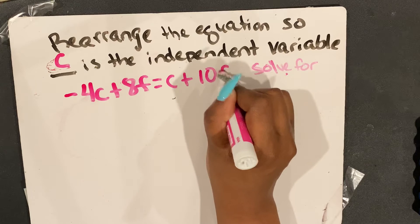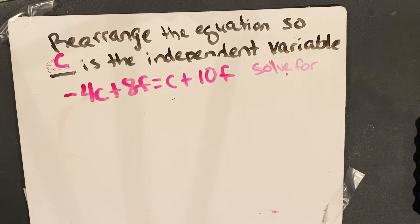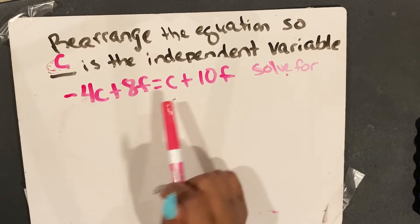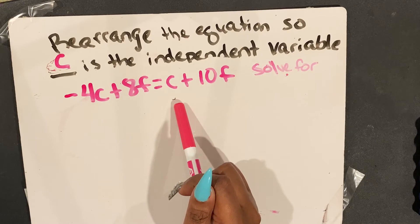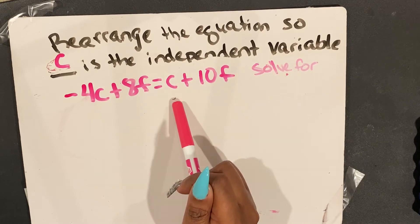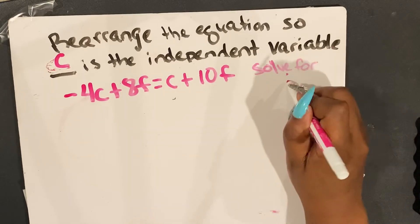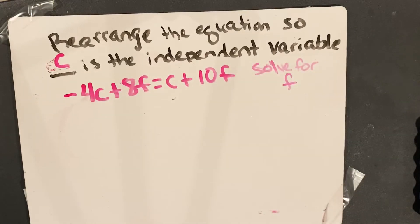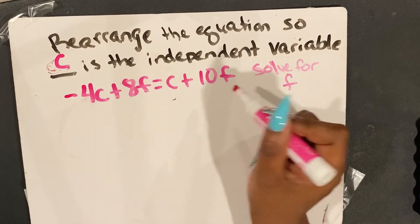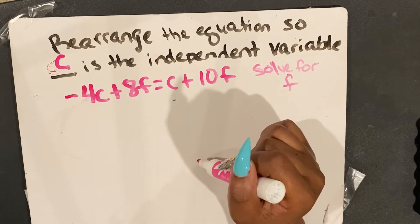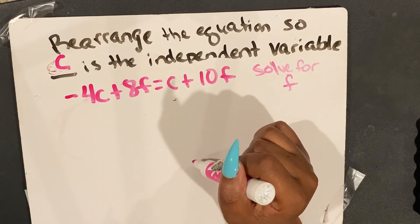So now m is my independent variable. This thing does not depend on this or this — this will always be the same. Hopefully that makes sense before we get into the second one. Take a picture if you need to. So for the next one, I'm just going to erase these and we're going to do the next one.